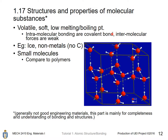Molecular substances are volatile, soft, and have very low melting and boiling points. This is because although intra-molecular bondings are covalent bonds, inter-molecular forces are very weak secondary bondings. Examples include ice and some non-metals, excluding carbon. Their molecules are very small, and the forces between molecules are basically just secondary bondings, making molecular solids generally not good engineering materials.